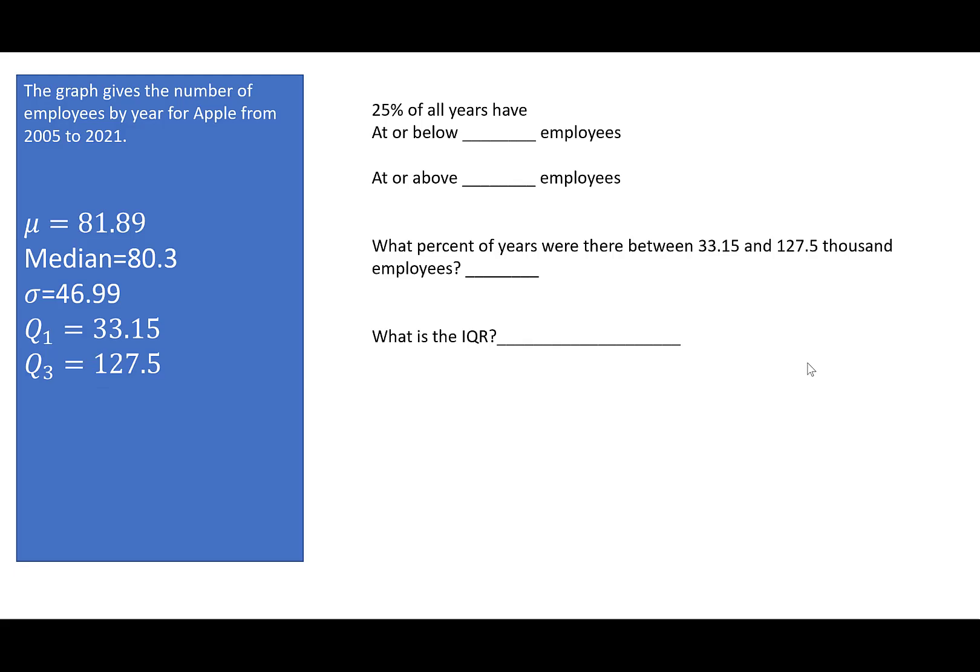All right. So let's ask some questions. The first one says 25% of all years have at or below what value of employees? So we just said that was 33.15 and I'm just going to write the word thousand. And then 25% of the years they had at or above 127.5 thousand employees. So watch for those words of below and above. It tells you to switch between the quartiles.